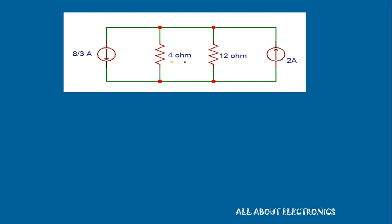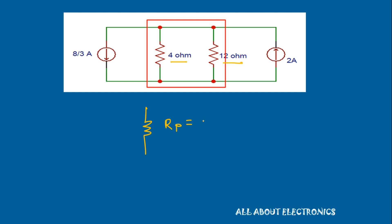As you can see, we now have the 4Ω and 12Ω resistors in parallel. The equivalent resistance Rp = (4 × 12) / (4 + 12) = 48 / 16 = 3Ω. We can replace these two resistors by their equivalent parallel resistance of 3Ω.